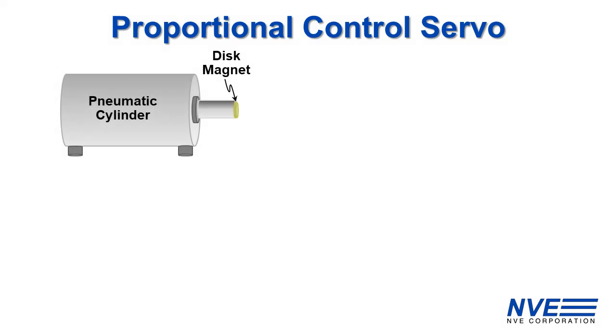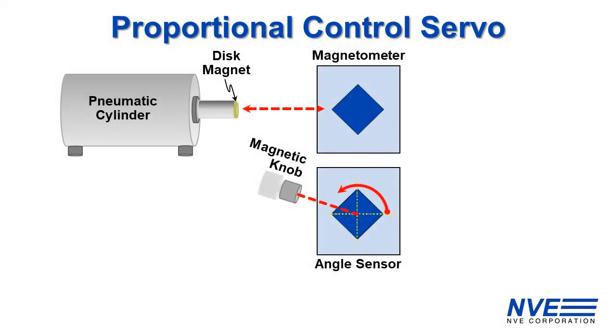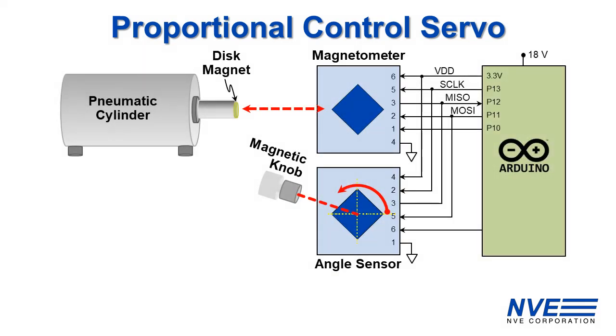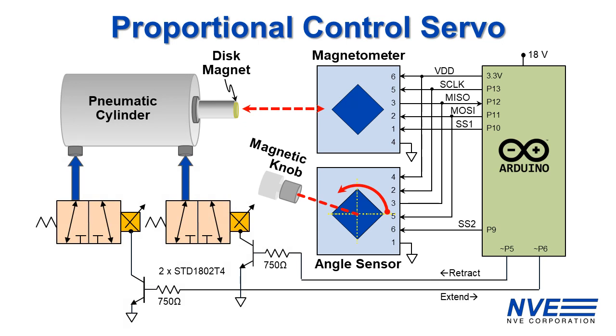Here's the schematic. Both sensors have SPI interfaces, so we just connect them in parallel with different slave selects. Two Arduino PWM analog outputs drive the valves via transistors.